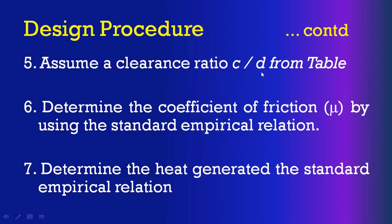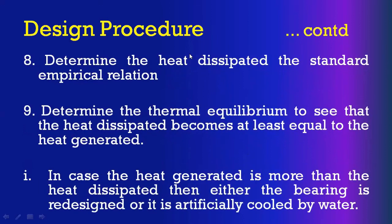Step 5 is selection of the C/D ratio from the data book, followed by determination of coefficient of friction, heat generation, and heat dissipation from standard relations. Finally, consider thermal equilibrium: if H_g ≠ H_d, external cooling must be provided. The amount of external cooling required is calculated using Q = m × s × ΔT. This completes the design procedure for hydrodynamic journal bearings.